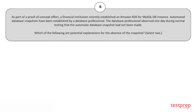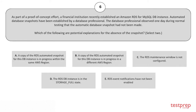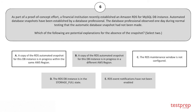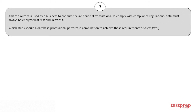Question 6: A financial institution recently established an Amazon RDS for MySQL DB instance as part of a proof of concept. Automated database snapshots have been established by a database professional. During normal testing, the automatic database snapshot had not been made. Which of the following are potential explanations for the absence of the snapshot? Select two. Options: A) A copy of the RDS automated snapshot for this DB instance is in progress within the same AWS region. B) A copy of the RDS automated snapshot is in progress in a different AWS region. C) The RDS maintenance window is not configured. D) The RDS DB instance is in a particular state; RDS event notifications have not been enabled. The correct answers are options A and C.